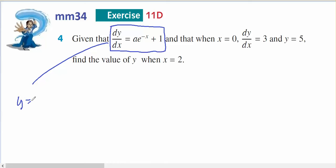If y equals the integral of dy dx then y is going to equal the integral of a e to the minus x plus 1 dx, which will be y will equal, if I anti-differentiate e to the negative x it's going to equal negative a e to the minus x plus x plus c.